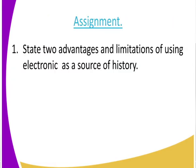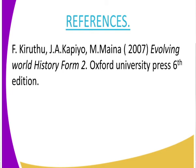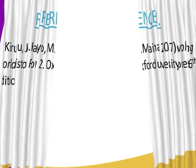As always, we give an assignment for more learning and research. Look at the advantages and limitations of using electronic sources — we have just named a few. Use your reference material, which is Evolving World History Form 2, Oxford Press, sixth edition, where you will find many more advantages and limitations of electronic sources.